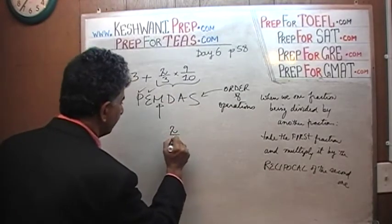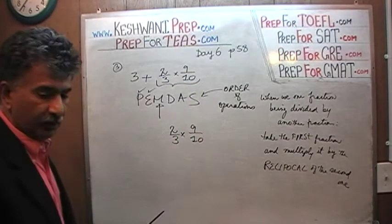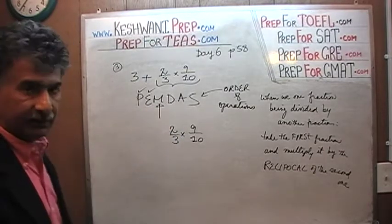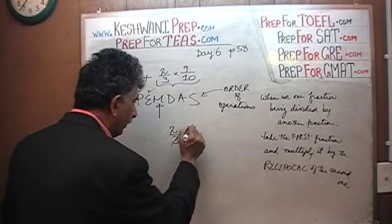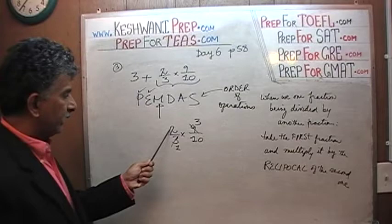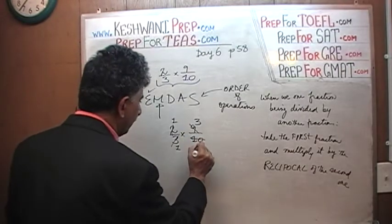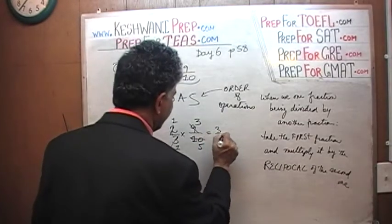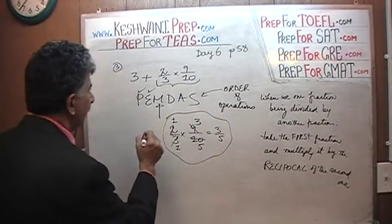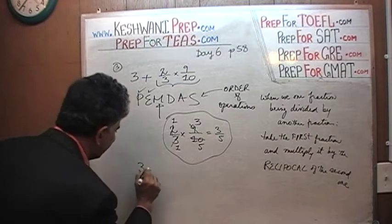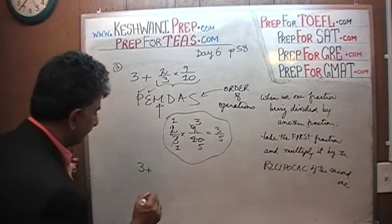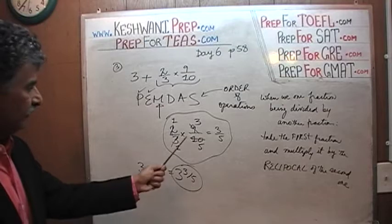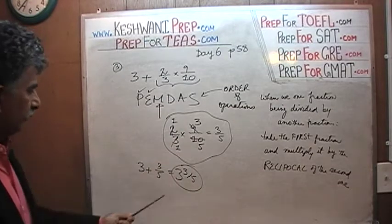First we do two-thirds times nine-tenths. Divide top and bottom by three — the three drops out and nine becomes three. Then divide top and bottom by two — the two drops out and ten becomes five. We end up with three-fifths. So what we're looking for is three plus three-fifths, which is simply three and three-fifths — that is our answer.